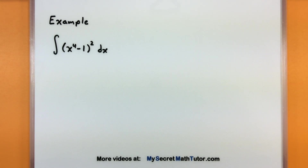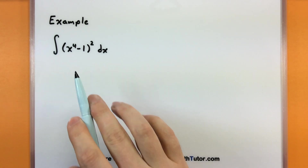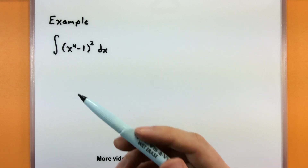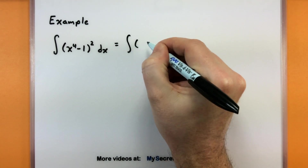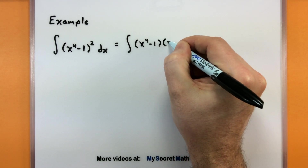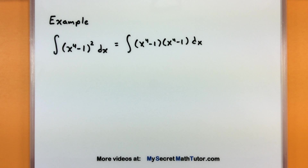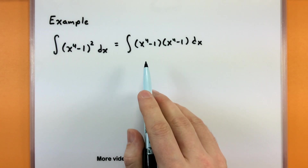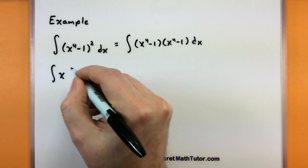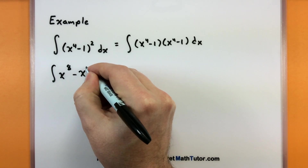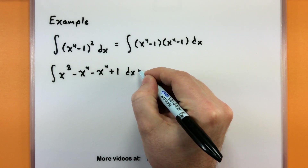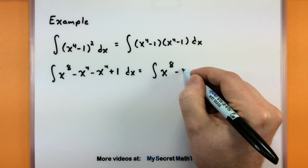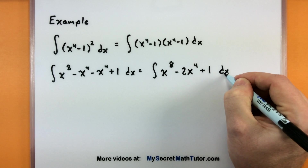Let's get back to ones we can do. Here I have x to the fourth minus one, all squared. A common mistake would be to try adding one to this power and dividing by three, but we have another function inside — we have to be careful. I'll manipulate this first by writing it as (x⁴ - 1)(x⁴ - 1), then expand it out into functions that are added together. So: x⁴ times x⁴ gives x⁸; the outer and inner terms give minus x⁴ and minus x⁴; the last terms give plus one. Combining: x to the eighth minus 2x to the fourth plus one.